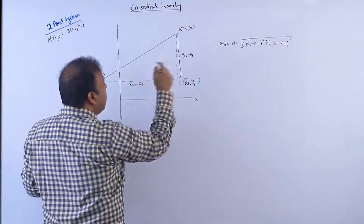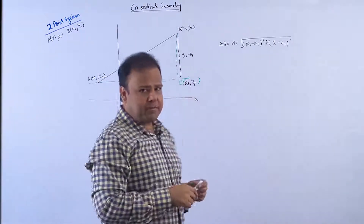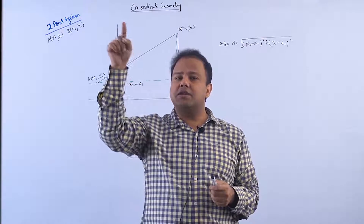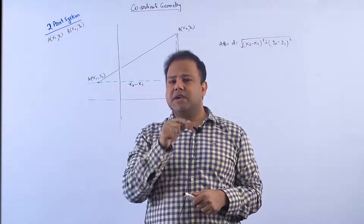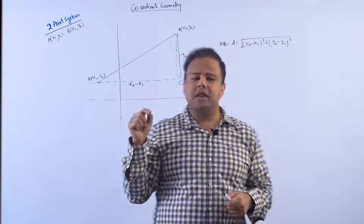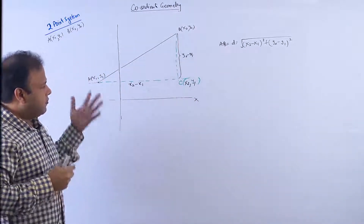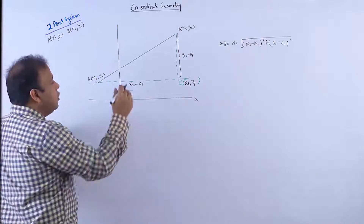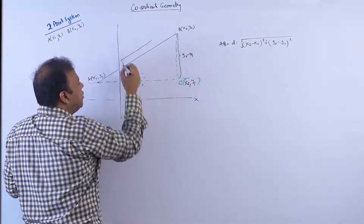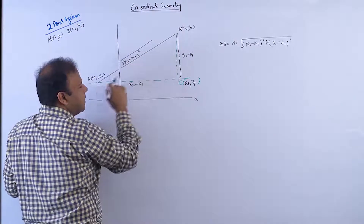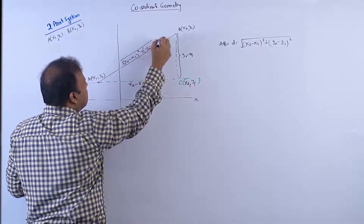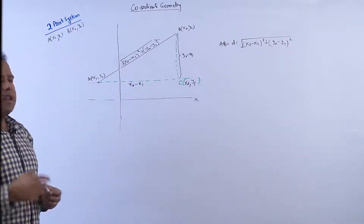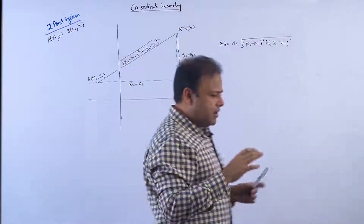Now we need the Pythagorean theorem, which everybody knows. In a right-angle triangle, base² + perpendicular² = hypotenuse². So the hypotenuse = √(base² + height²). That is the distance between A and B — the distance formula: √[(x2−x1)² + (y2−y1)²]. It is as simple as that.